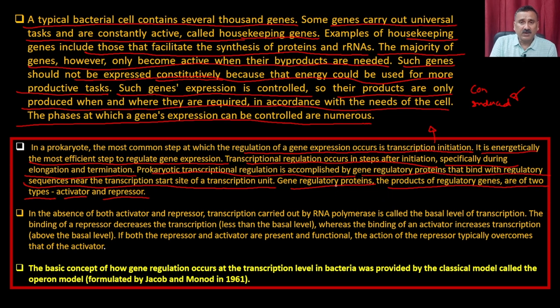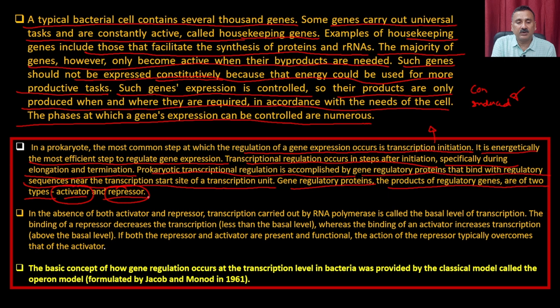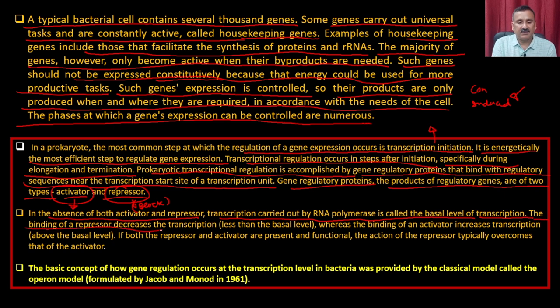Gene regulatory proteins regulate the efficiency of RNA polymerase to bind the initiation site. Activators facilitate RNA polymerase binding to the initiation site, while repressors block or inhibit the process. In the absence of both activator and repressor, transcription carried out by RNA polymerase is called the basal level of transcription. Repressor binding decreases transcription below the basal level, while activator binding increases transcription above the basal level.